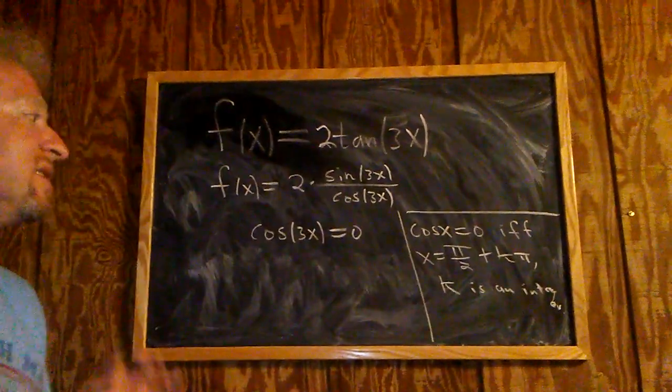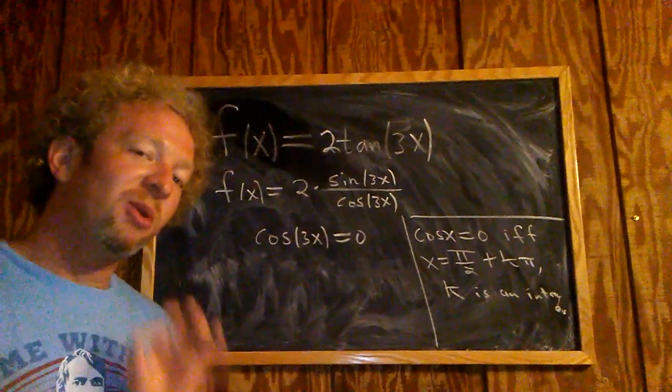Okay? So cosine x is equal to zero only when x is equal to pi over 2 plus k pi, where k is an integer.